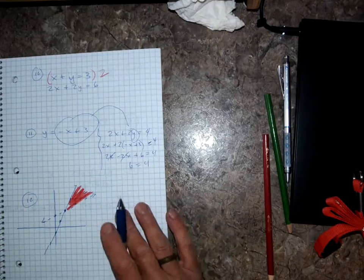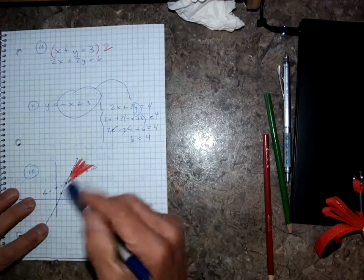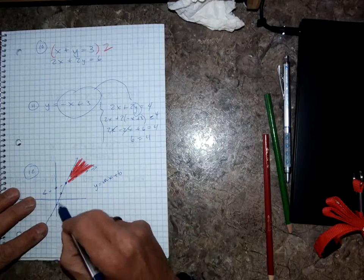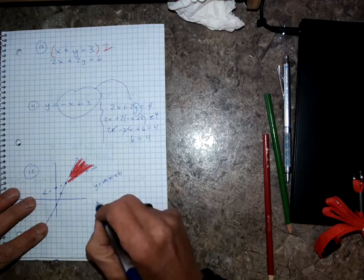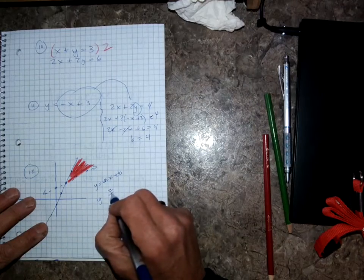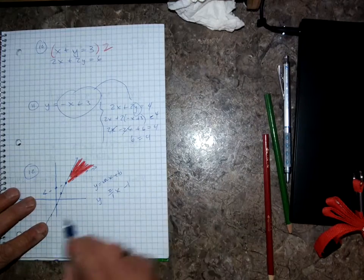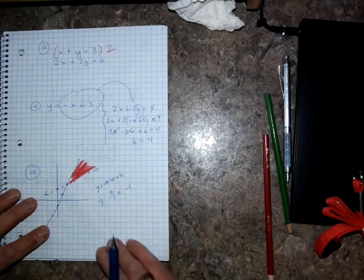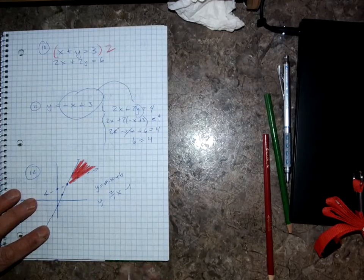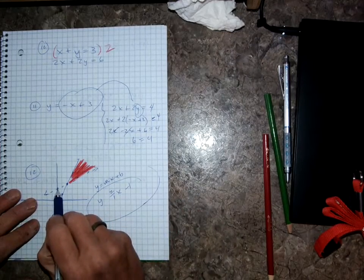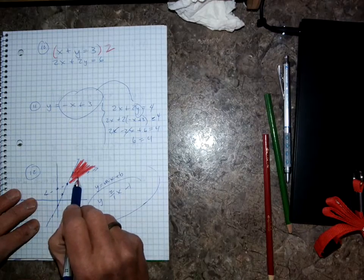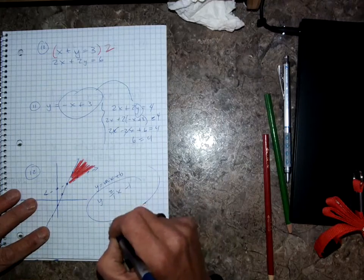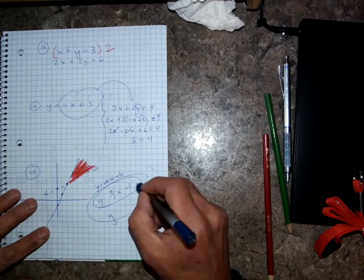Number twelve: think y equals mx plus b. This line goes up 2 over 1 and goes through negative 1. The point seems to be under the line, so it's probably less than that line. The other line starts at 2 and goes up 1 over 2. The point seems to be above this line, so it would be greater than. You'll get two different answers — one for each line.